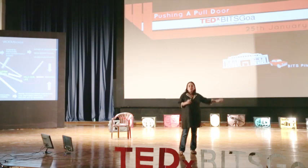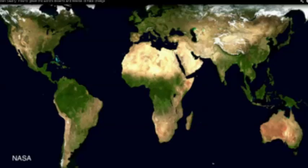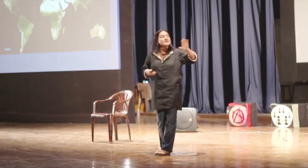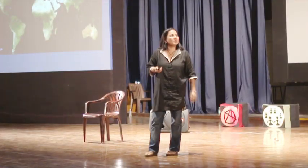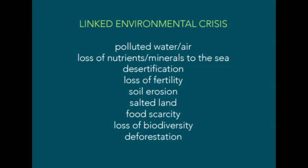All of these techniques destroy the soil. A NASA image shows how much land has been desertified in recent years. Environmental problems linked to bad farming methods include: polluted water, desertification, soil erosion, food scarcity, and deforestation.